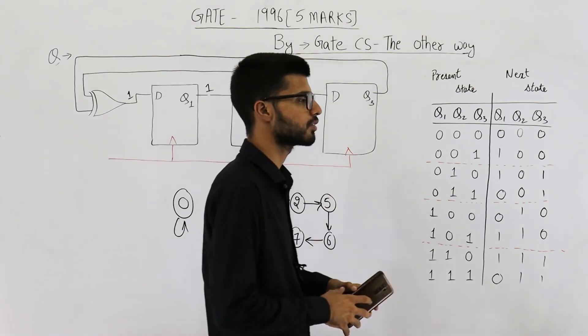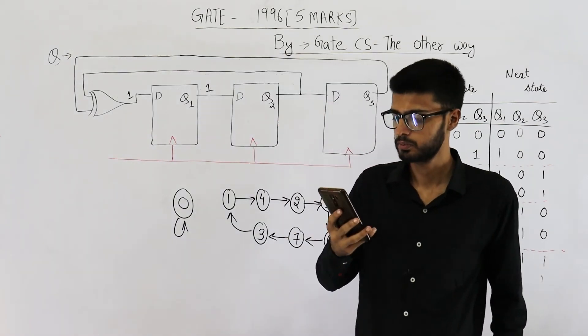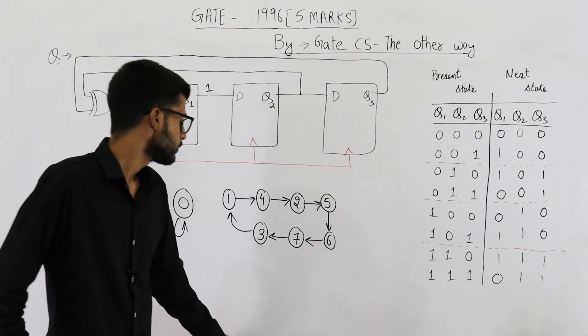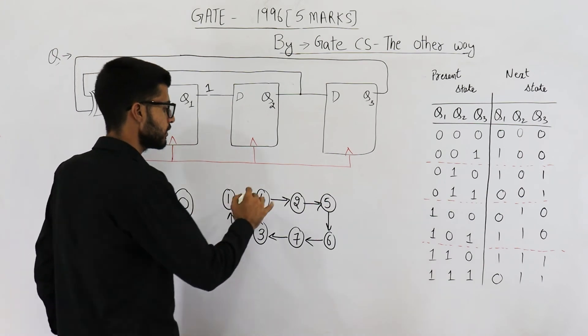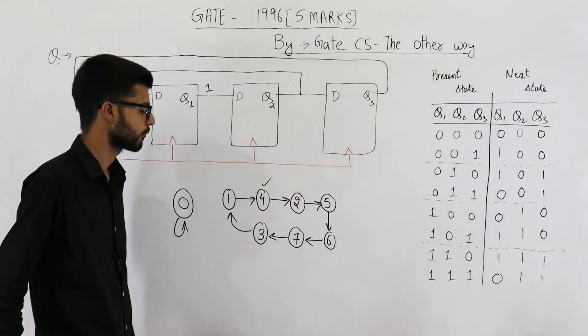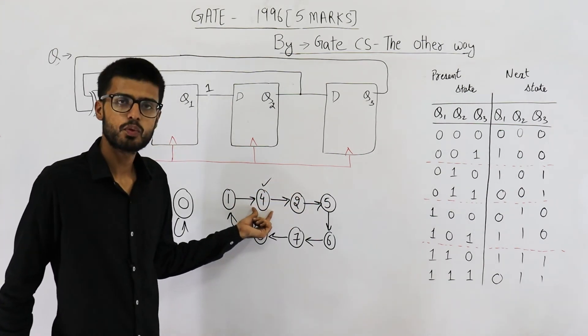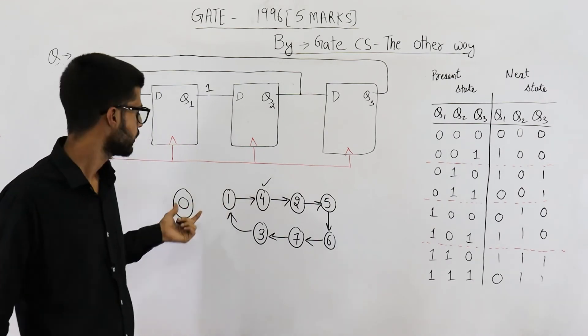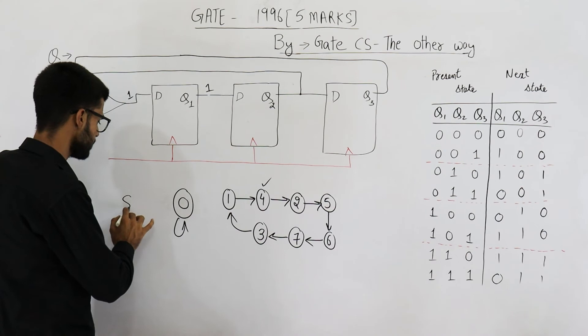Now there is a B part to this question. Let's answer that also. So B part says, given that initial state of the circuit is S4, identify the set of states which are not reachable. So if the current state or initial state is S4, from the state S4, you can never reach the state 0 or S0. So your answer of B part is S0.